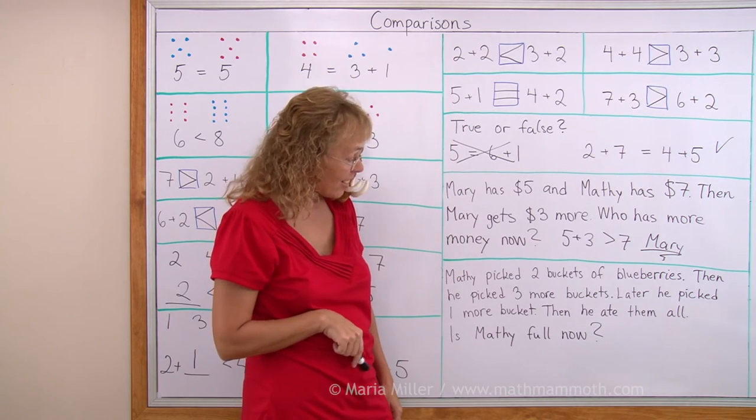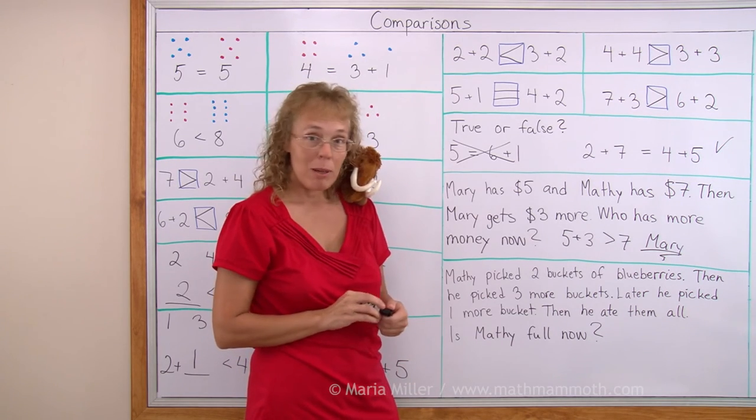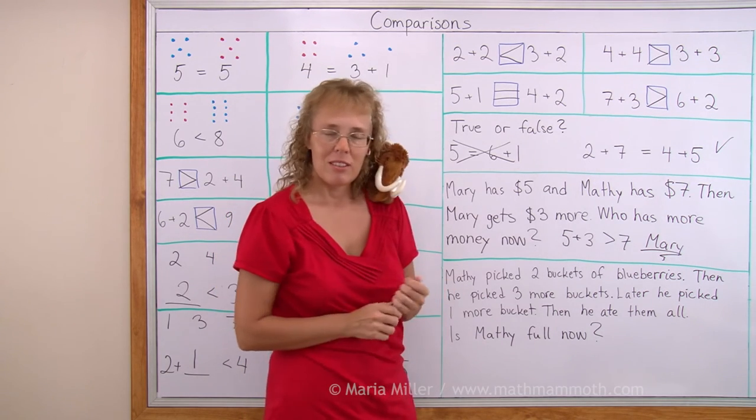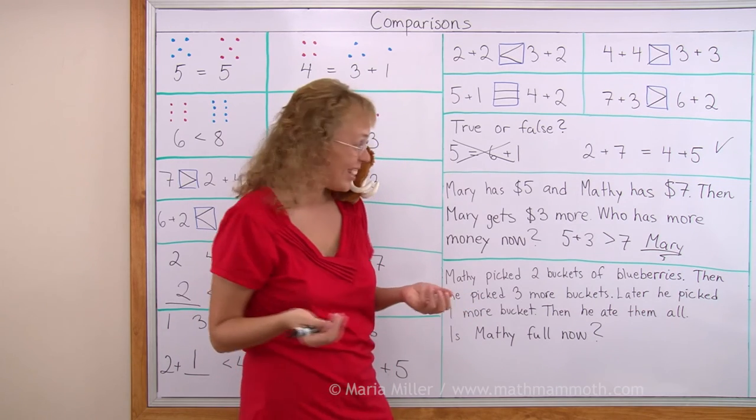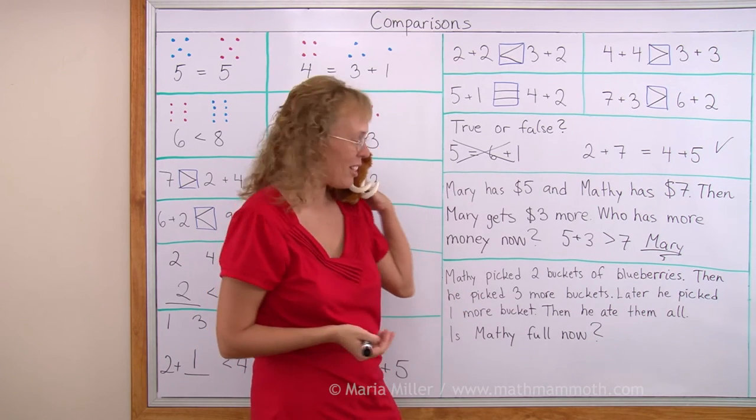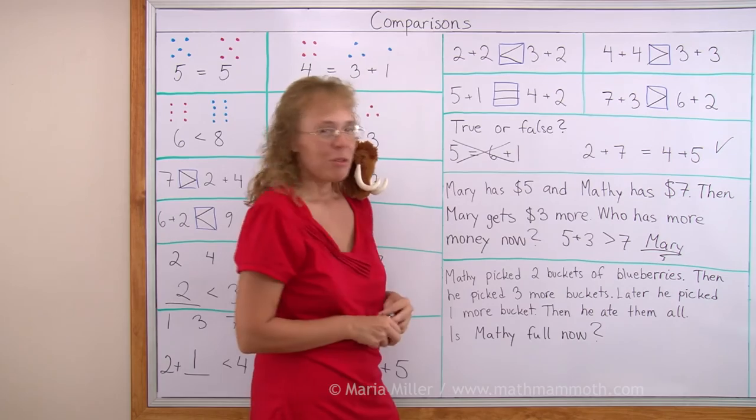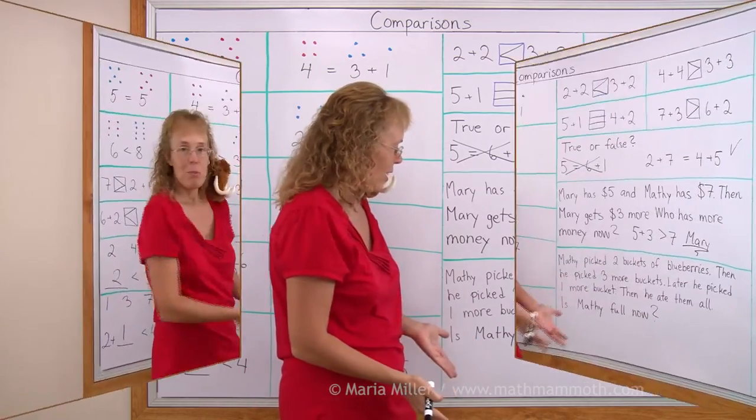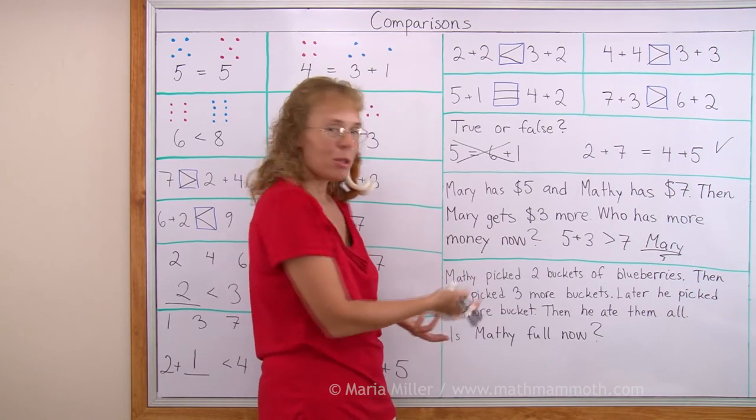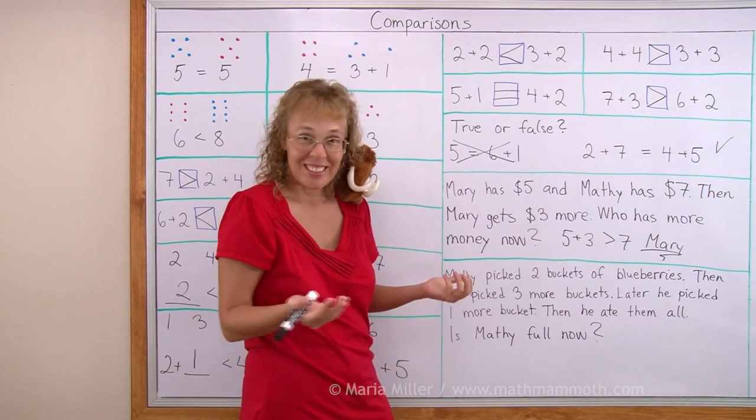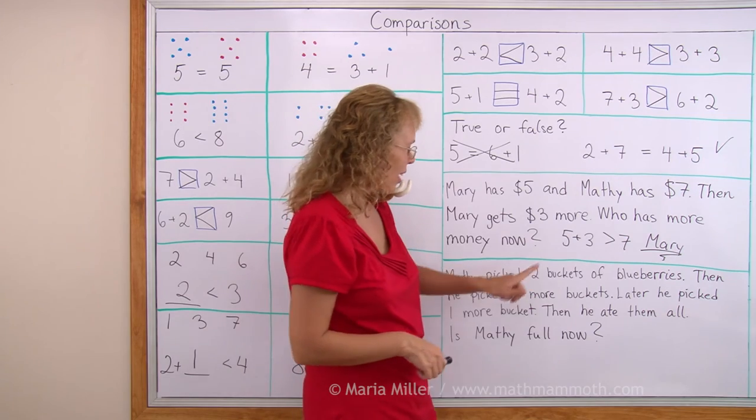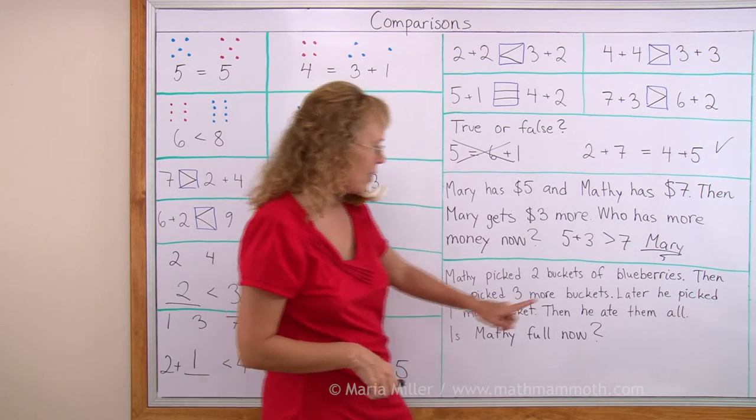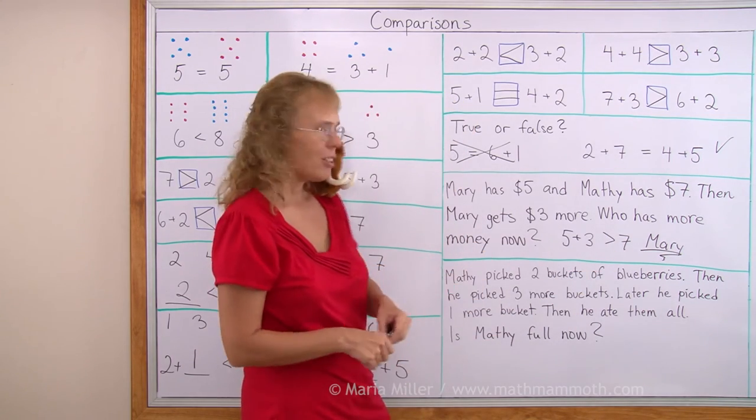Matthew? That's not a math word problem. You think Matthew's full now? He's eaten lots of blueberries. He's full now, right? I think he's full. But we need to change this problem because it's not a math word problem. What kind of question can we ask that would use these numbers in the problem? Think. See, Matthew picked 2 buckets and then picked 3 more buckets and then later he picked 1 more bucket. What can we ask? How can we use those numbers?